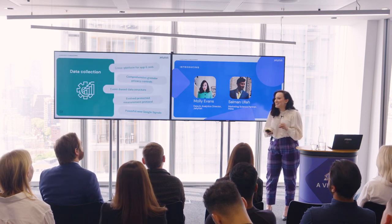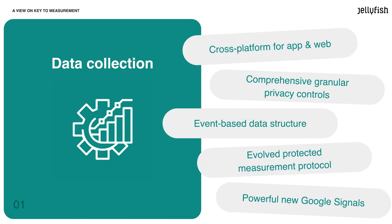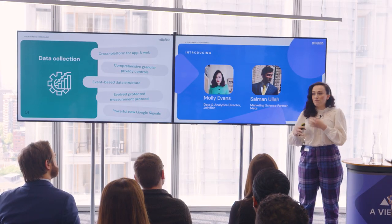Let's get into data collection, because this is a meaty topic everyone's keen to talk about. There are some really exciting, fundamental differences in the way GA4 has been built around privacy. As mentioned in previous sessions, we're seeing less and less observable cookie data, and we want to move away from reliance on cookie-based identifiers. With Google Analytics 4, we're moving much more into using various logged-in signals to build up that connectivity.